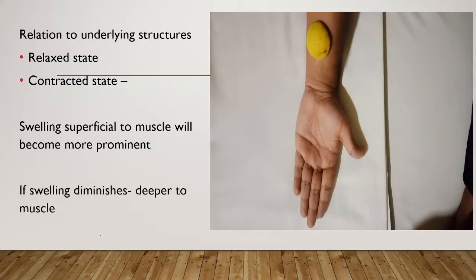Then we need to palpate. After contraction, we need to also give resistance — the patient contracts the muscle and you give resistance so they work against it, making the muscle more contracted. So there are three steps: first, relaxed state — similar to mobility assessment; second, muscle contraction with movement; and third, giving resistance against the muscle movement.